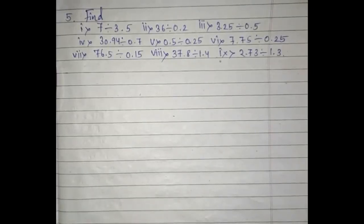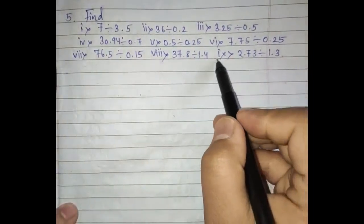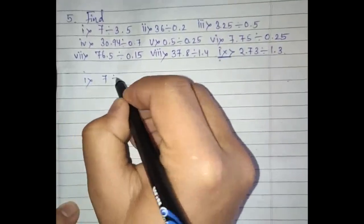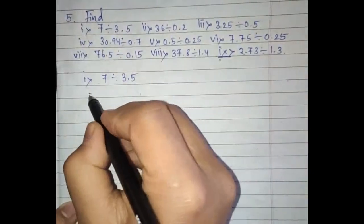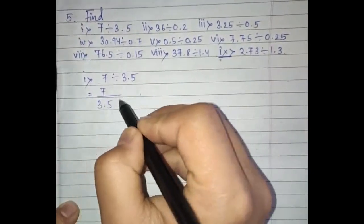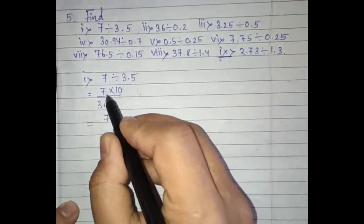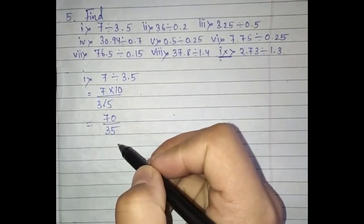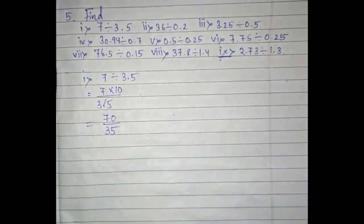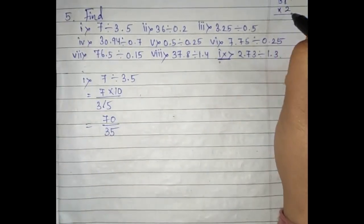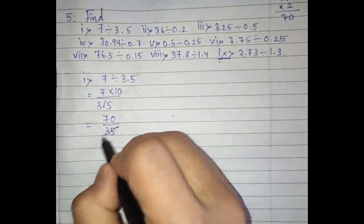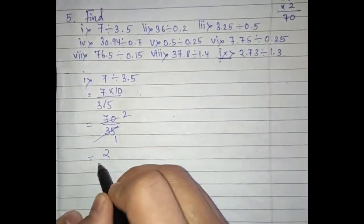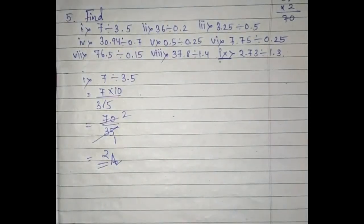Moving on to question number five, which has questions up to number nine. Let us start with number one: 7 divided by 3.5. Write 3.5 below, remove the decimal point and write 10 above, so it becomes 70 divided by 35. Since 35 times 2 equals 70, the answer is 2.